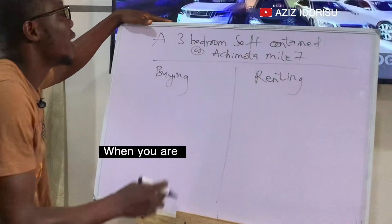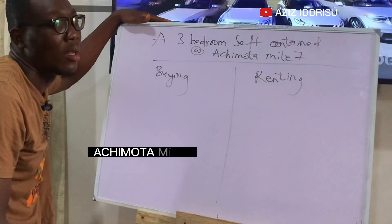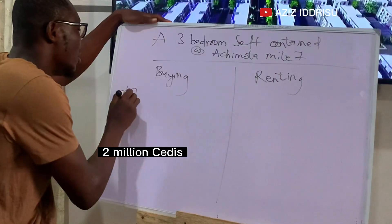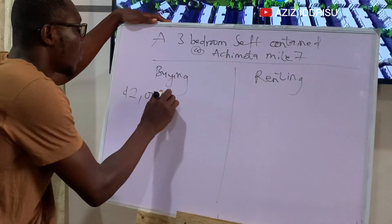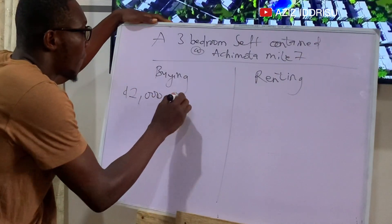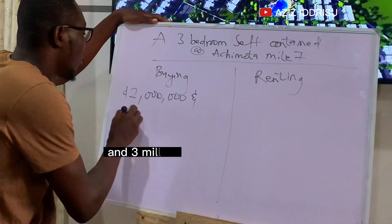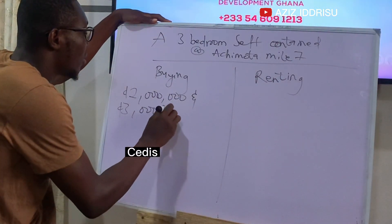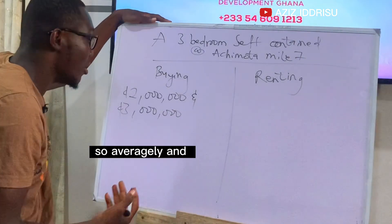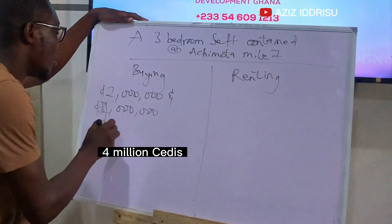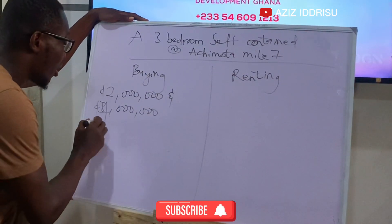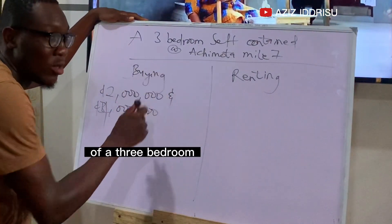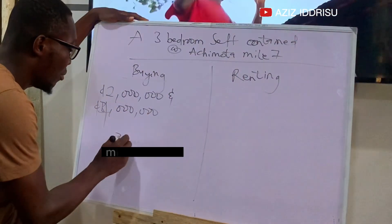When you are buying a three-bedroom self-contained at Achimota Mile 7, the price ranges somewhere between two million and four million cedis. So averagely, you'll be doing an outright purchase of a three-bedroom self-contained at three million cedis.